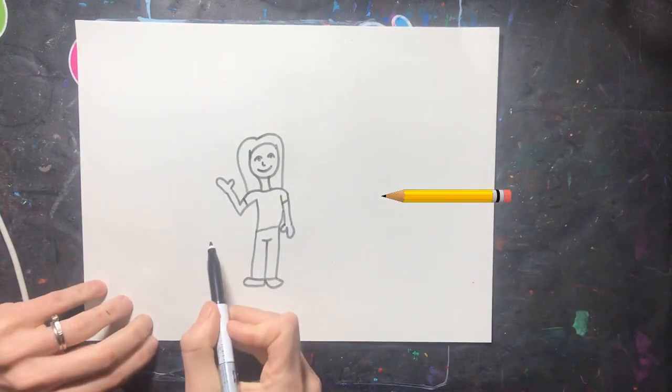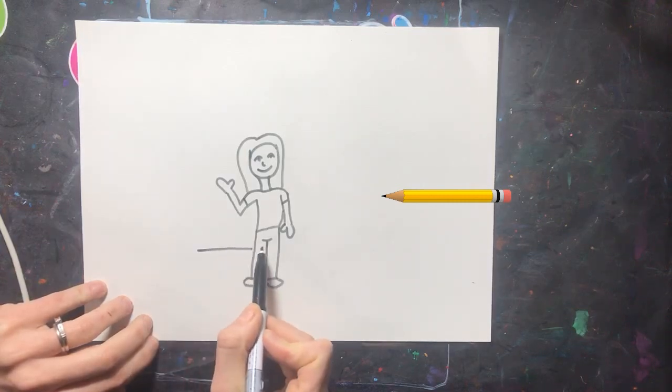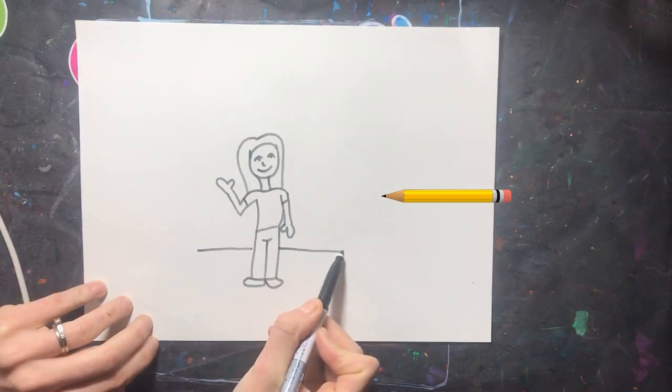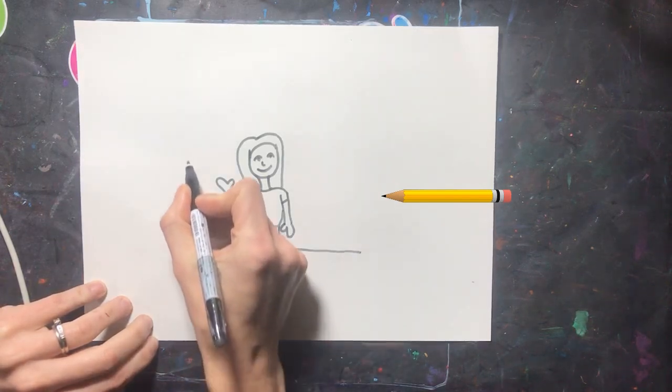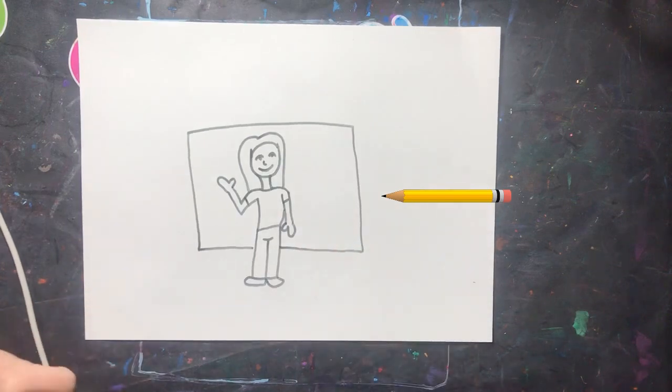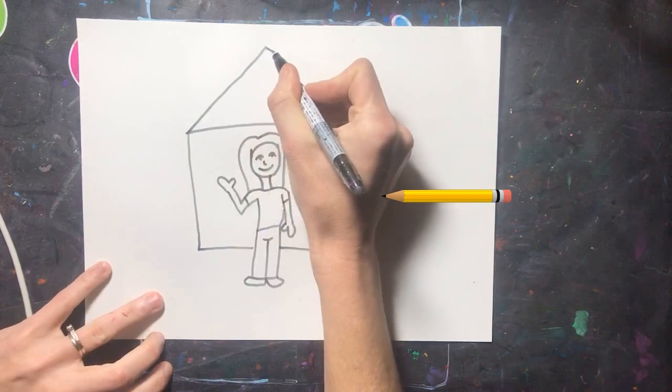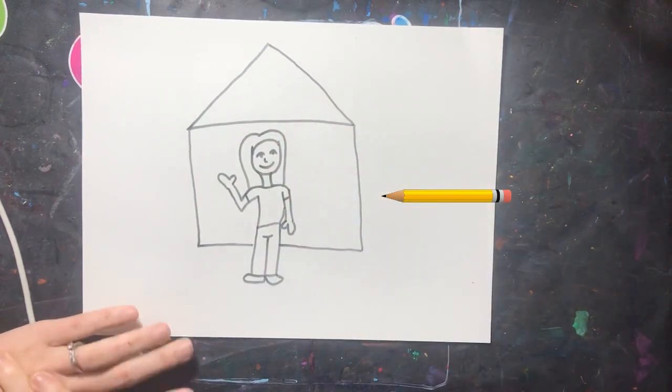Next, we're going to draw a house behind our person. I'm going to start the bottom of my house near my person's legs. Notice how I jump over my person's legs. This is how we are going to show overlapping. Our person is in front and the house is behind.